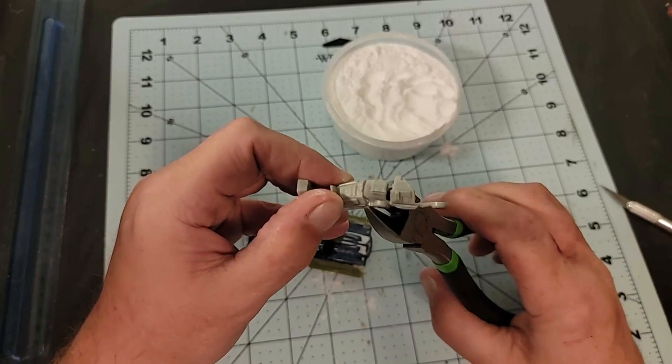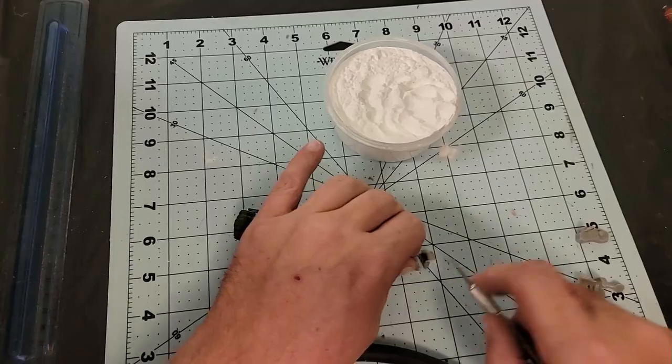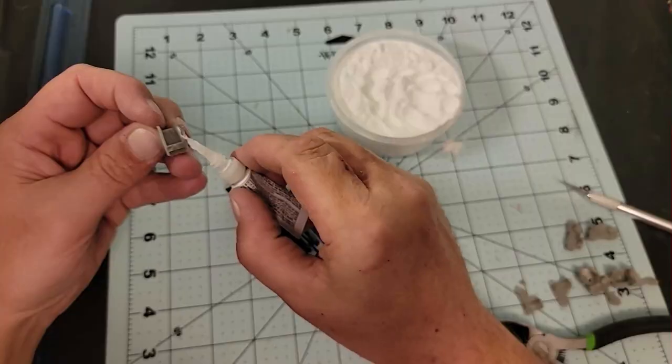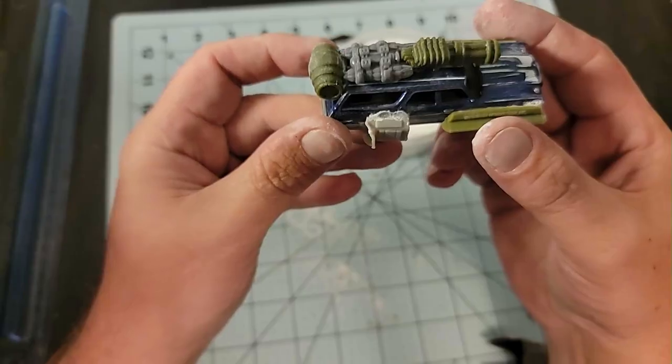I also had these armor leg pieces that I wanted to use a part of, so I clipped off the part that I wanted and stored the rest away and used the curved plating to cover the back wheels to finalize the metal plating for this car.